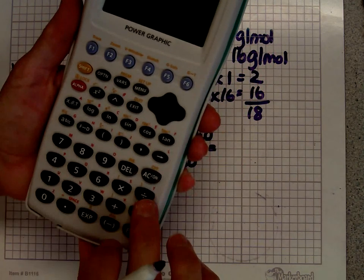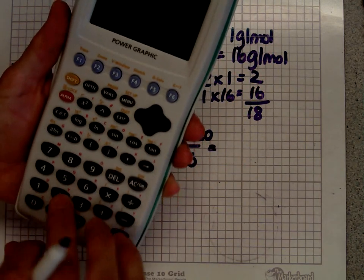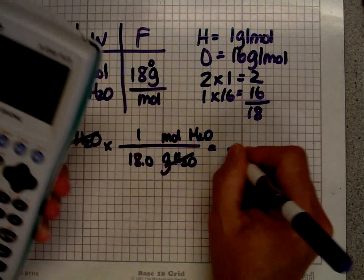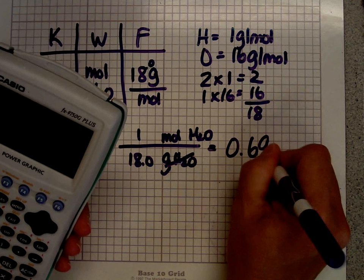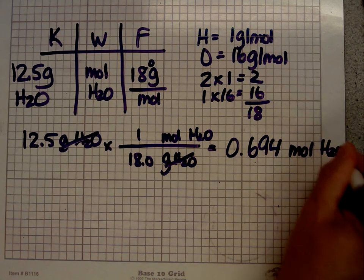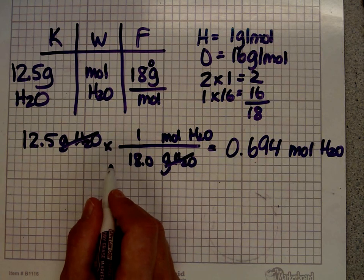And so I take 12 times 1 divided by 18. 12.5, try and do that right, divided by 18. And I get 0.694 moles of water. Three significant figures, three significant figures. That's great.